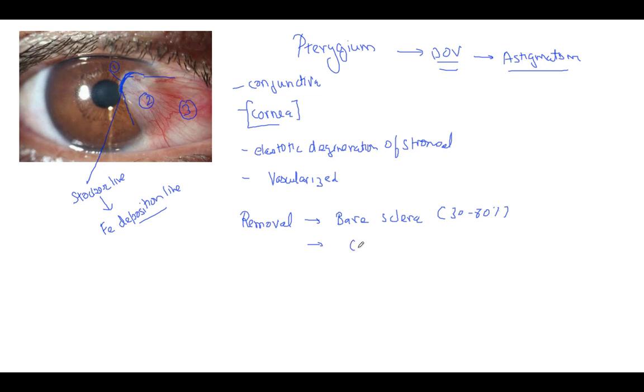In this bare sclera, we can put a conjunctival autograft from another place, let's say from the fornix of the patient, or we can take an allograft from a donor cornea. Sometimes we can use mitomycin C. As you know, mitomycin C is anti-fibrotic, so it would basically prevent any growth of conjunctiva again. We can use amniotic membrane graft or we can do a partial lamellar transplant in cases where there is opacity because of deep penetration of the pterygium inside the corneal tissue.